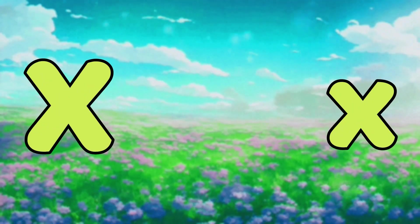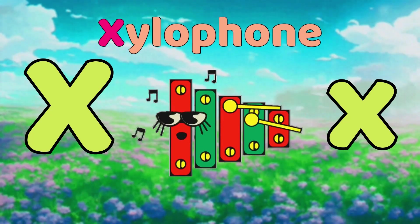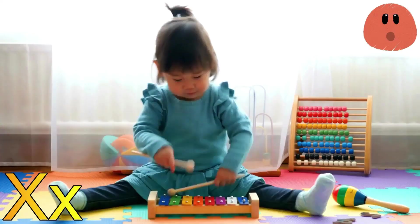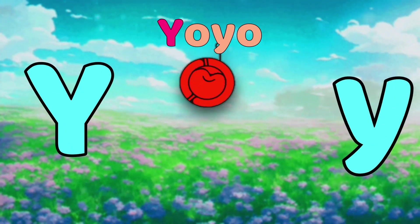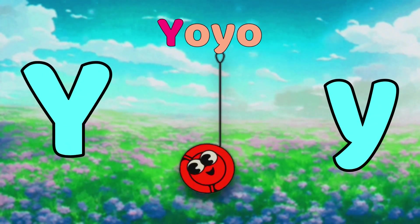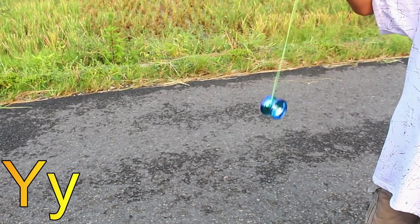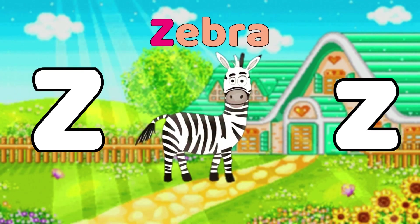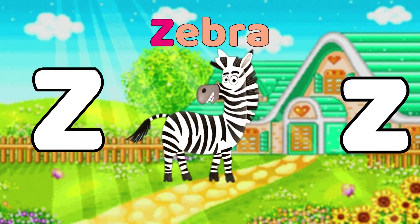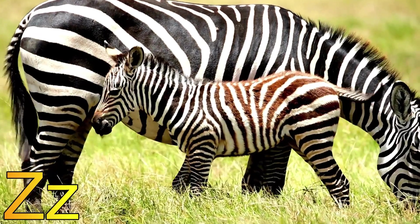X is for Xylophone. X, Xylophone. Y is for Yo-yo. Y, Yo-yo. Z is for Zebra. Z, Z, Zebra.